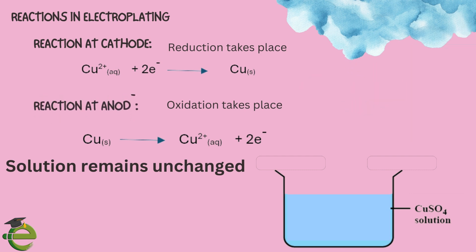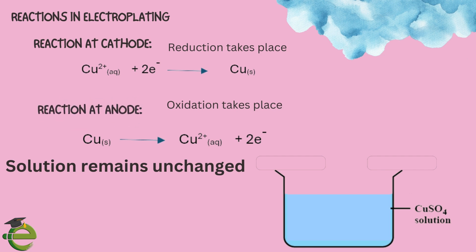At the anode, oxidation takes place. The anode is made up of copper atoms. These atoms lose electrons and become copper ions, which then enter the solution. As a result, the concentration of copper ions remains the same in the solution.